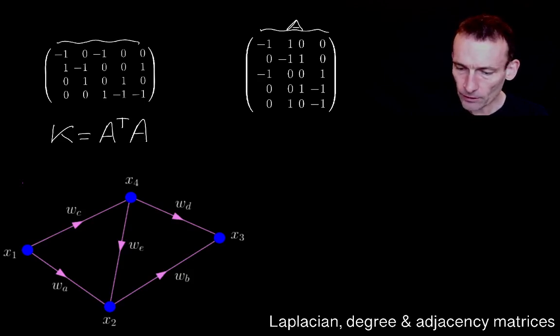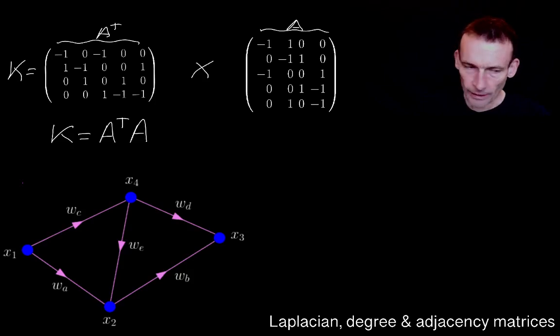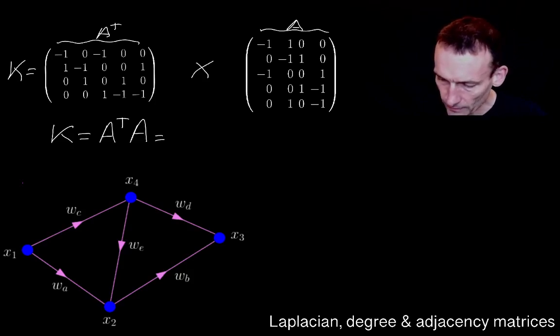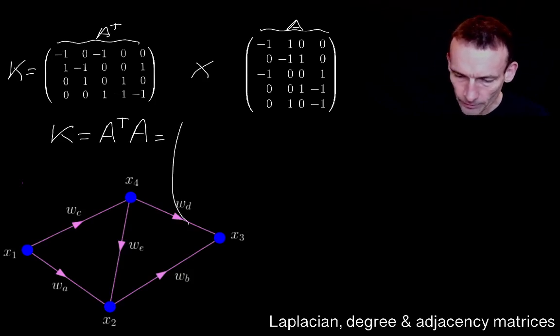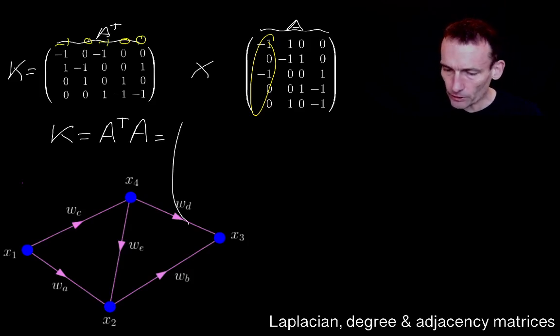And then this is A transpose. What I want to do is work out K which is this times this. So let's just go ahead and do that. I think what I might do is put, remember what we have to do is you take that and you put it over the top. Minus 1, 0, 0 and you bring it down.